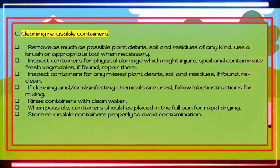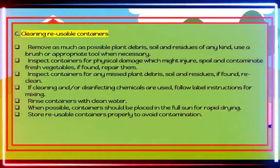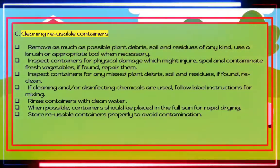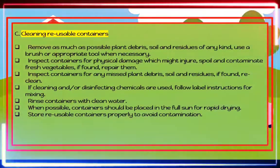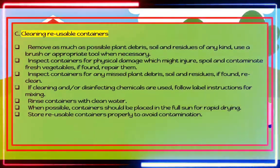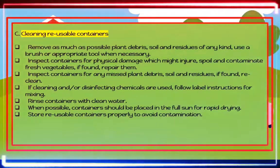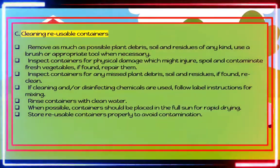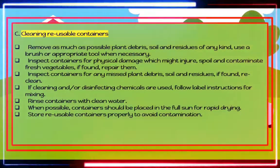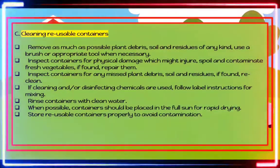Cleaning reusable containers: First, remove as much plant debris, soil, and residue as possible; use a brush or appropriate tool when necessary. Second, inspect containers for physical damage which might spoil or contaminate fresh vegetables; if found, repair them. Third, inspect containers for any missed debris; if found, re-clean. Fourth, if cleaning or disinfecting chemicals are used, follow label instructions for mixing. Fifth, rinse containers with clean water. Sixth, when possible, place containers in full sun for rapid drying. Seventh, store reusable containers properly to avoid contamination.